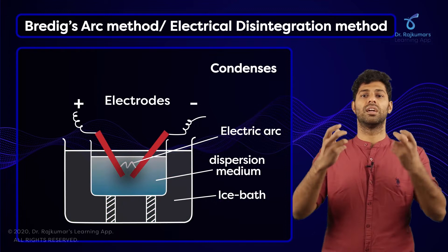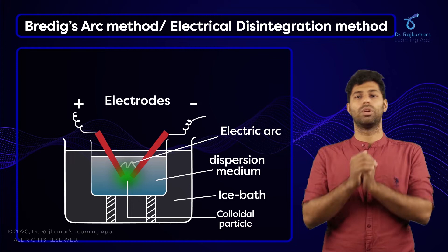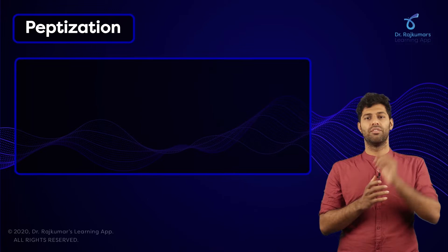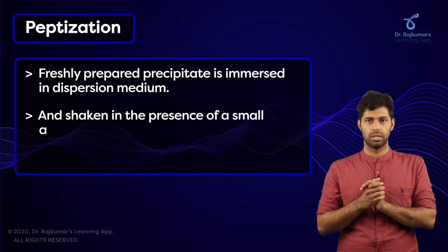In this way, we prepare colloids using Bredig's Arc method. Now coming to the third method of preparation, that is peptization. In peptization, we find that when a freshly prepared precipitate is immersed in a dispersion medium and shaken in the presence of a small electrolyte, they turn into colloidal salts.